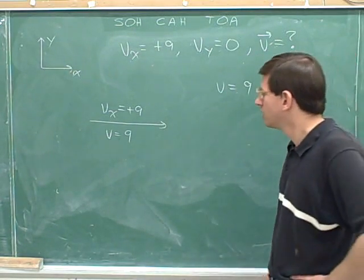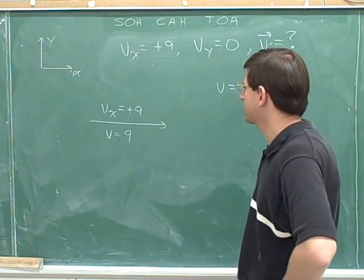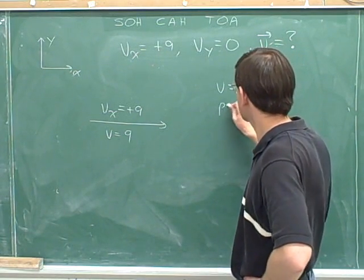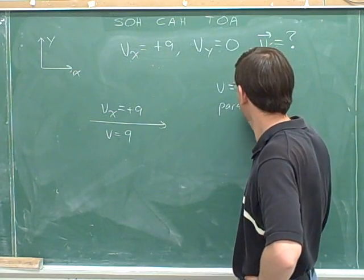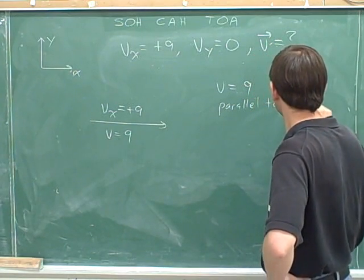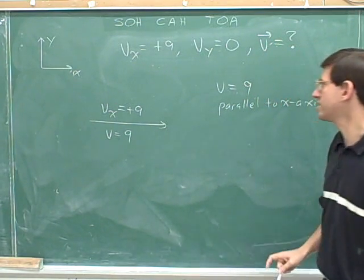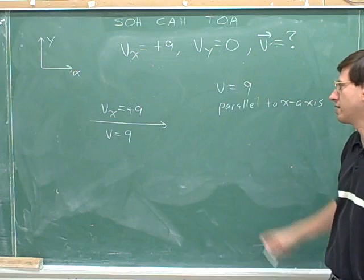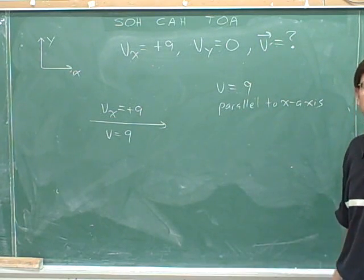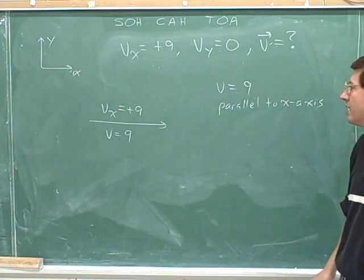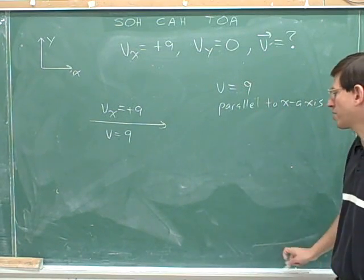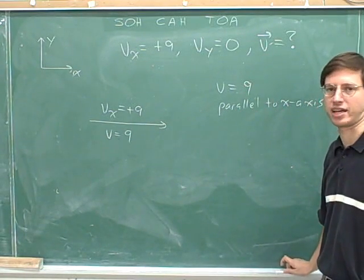How would we describe the direction? I think the best way to describe the direction here is that we're parallel to the x-axis. So I would say that the overall vector here has a magnitude of 9 and a direction that's parallel to the x-axis. Our overall vector v has a magnitude of 9 and a direction that's parallel to the x-axis.